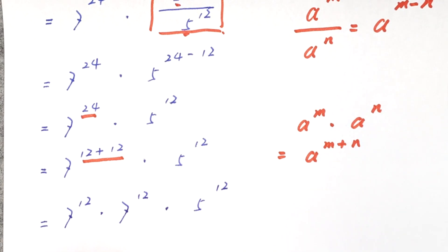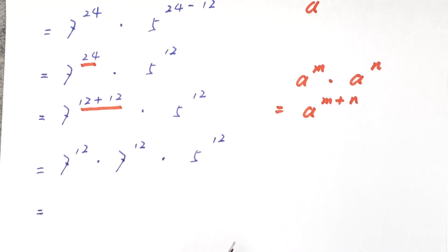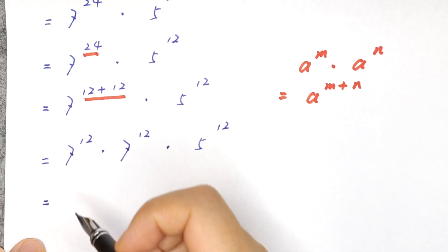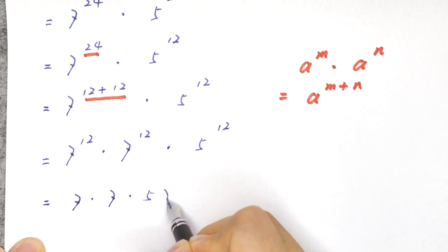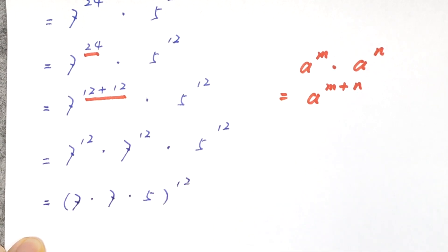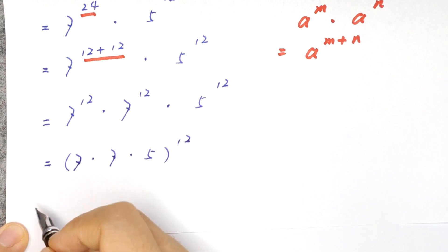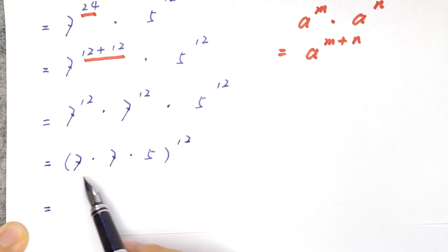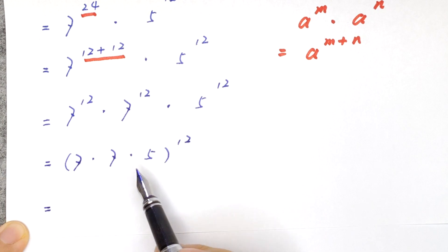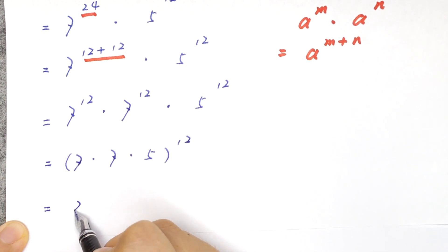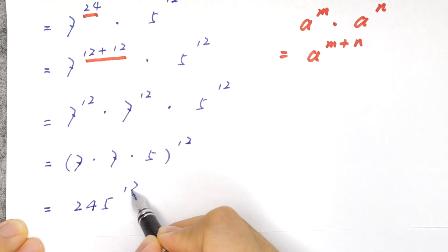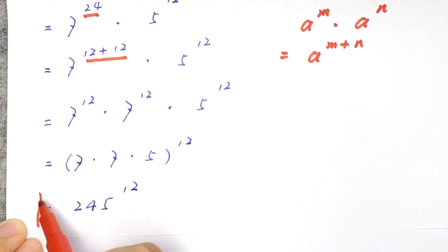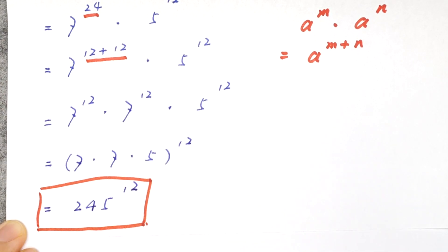It will be equal to 7 times 7 times 5, bracket to the power of 12. And 7 times 7 times 5 equals 245, so the answer is 245 to the power of 12. This is the final answer. Thank you for watching and see you in the next video. Bye!